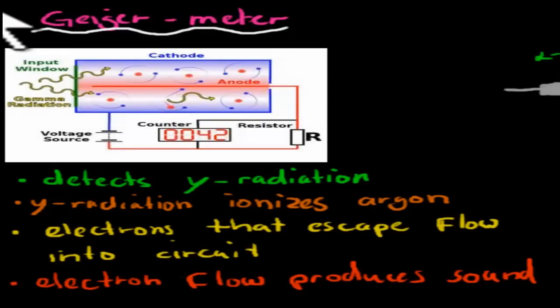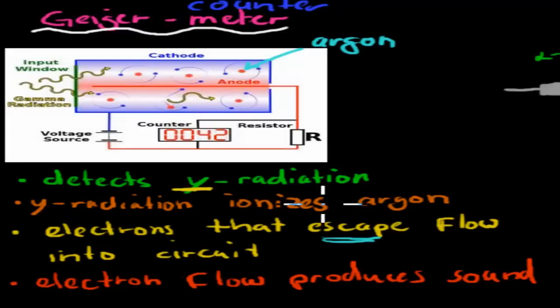So in the Geiger meter, or sometimes also known as the Geiger counter, both of these words are used. What happens is these are used to detect gamma radiation. So remember, gamma radiation was just that excess energy which is removed in the form of a ray. The reason why is because gamma radiation ionizes argon. So we can imagine these red dots here in the middle to be argon. And argon is usually a noble gas, but if there's energy added to it, what will actually happen is electrons escape. So I've written electrons that escape flow into circuits. So this radiation here, which is meant by this squiggly yellow line, will actually make argon lose an electron.